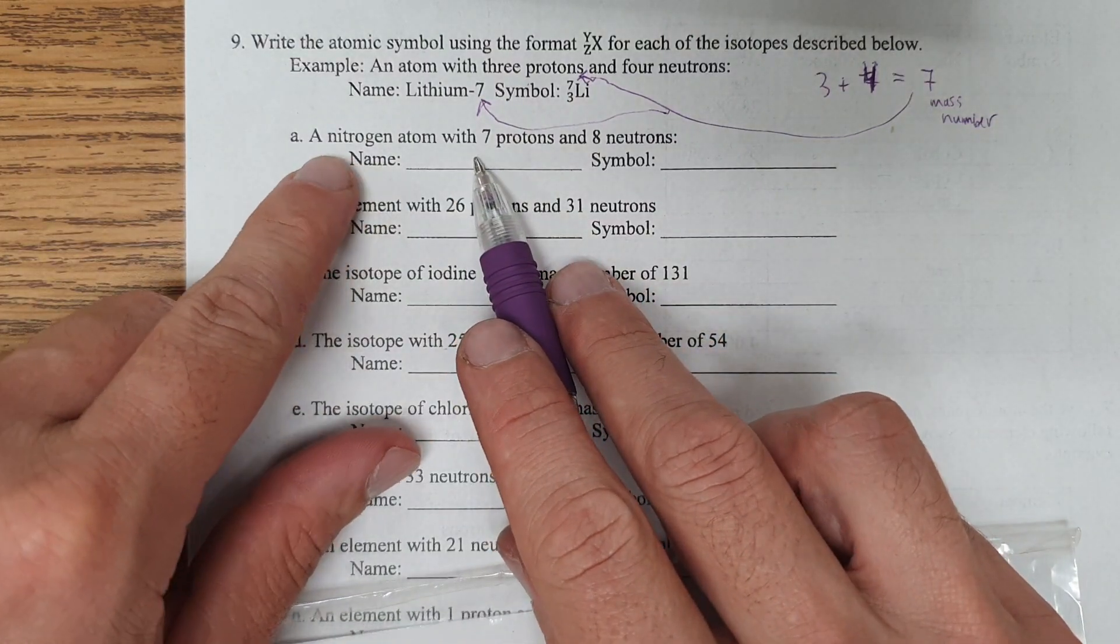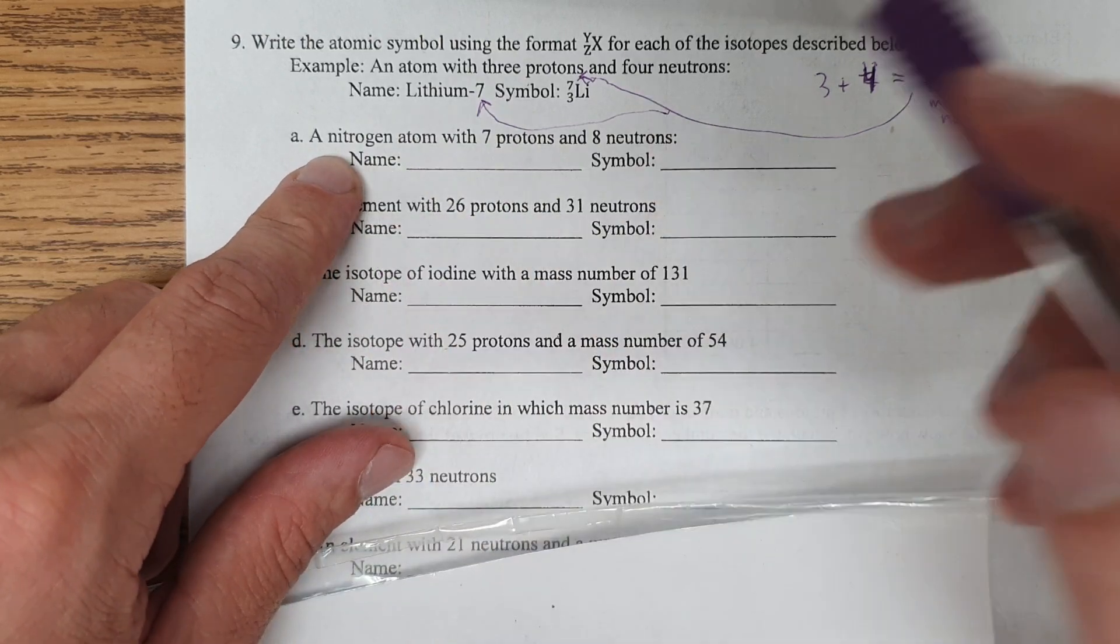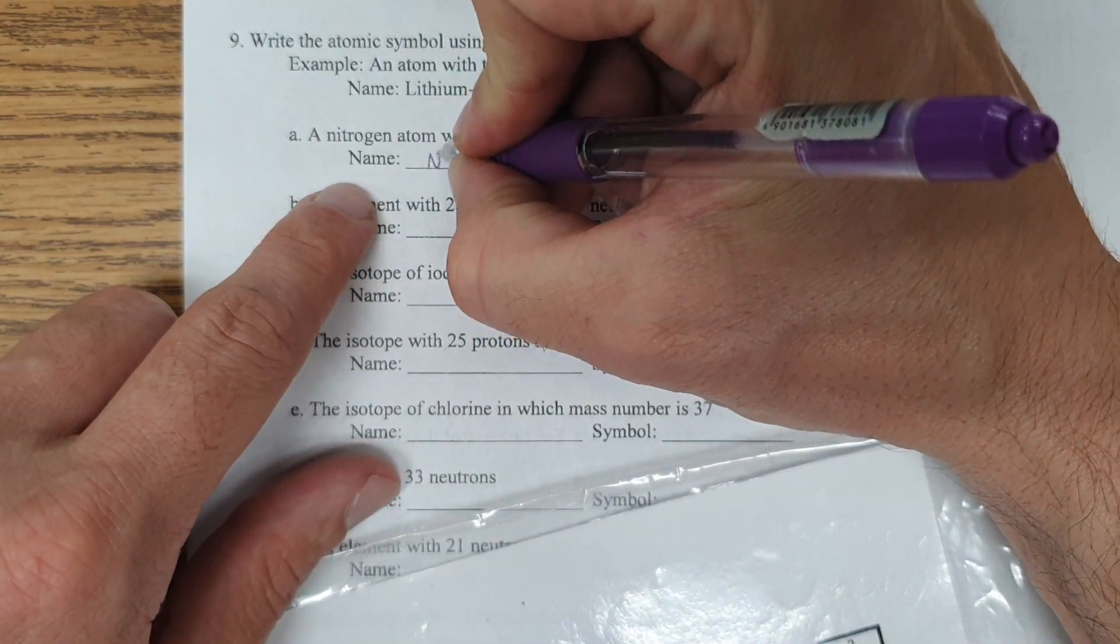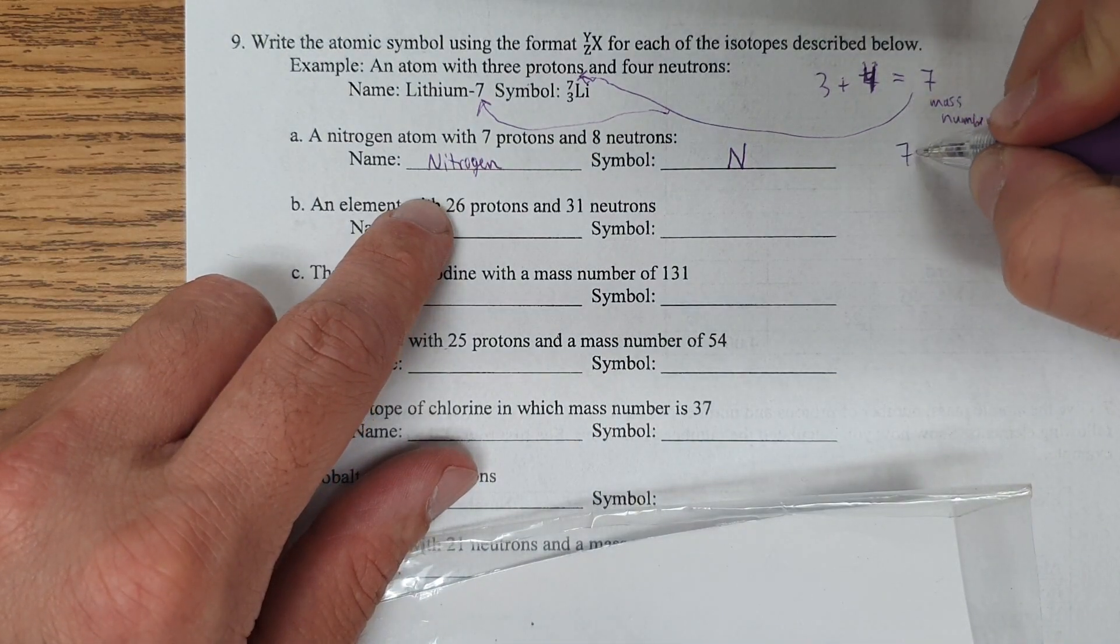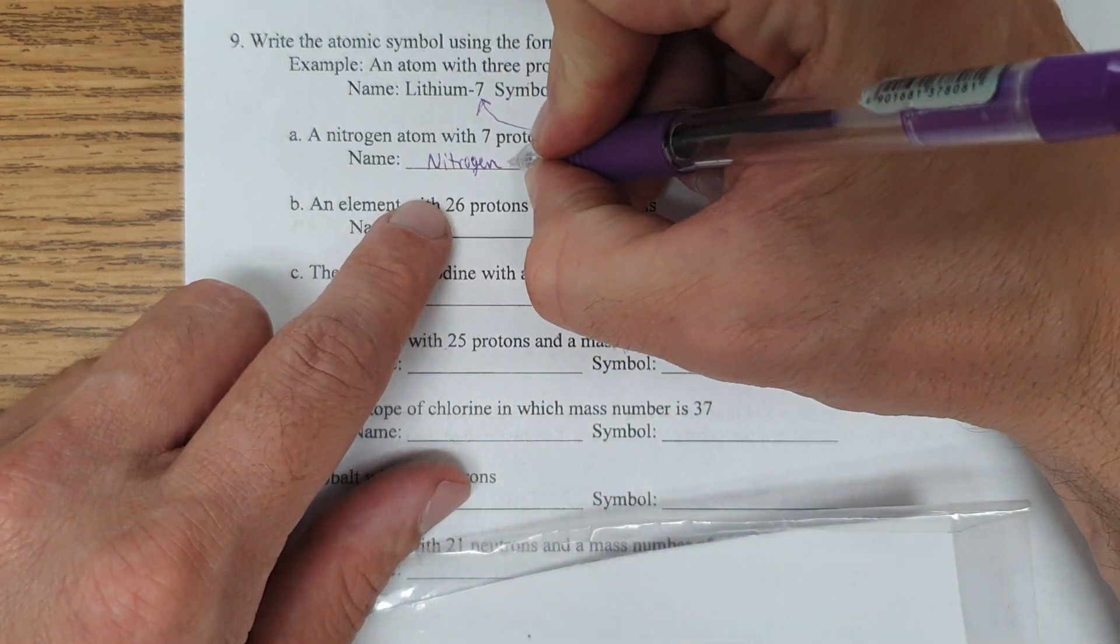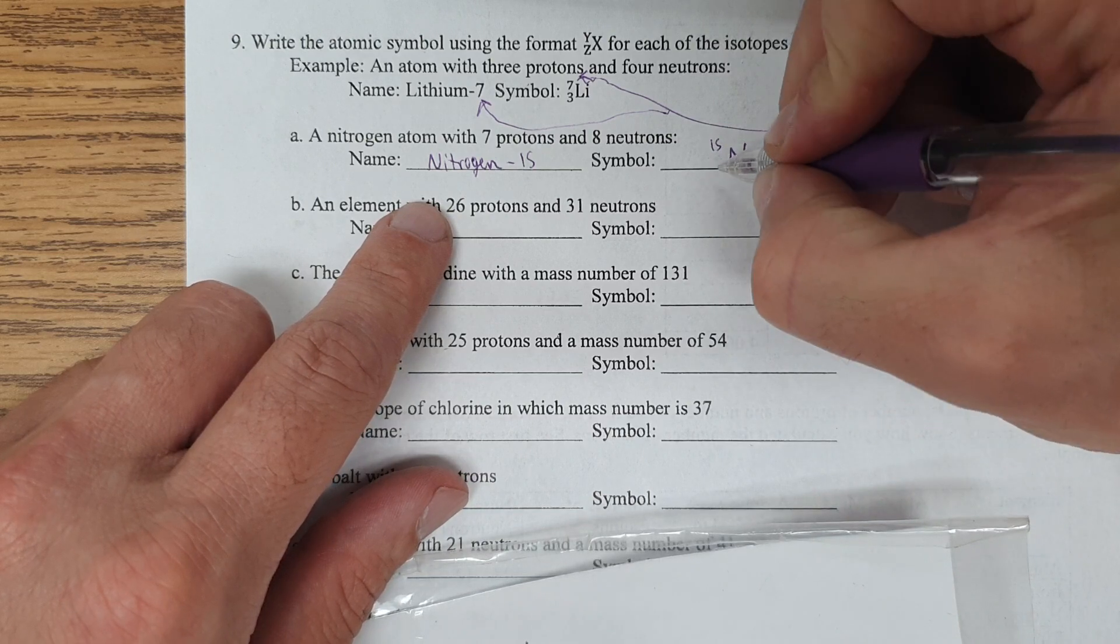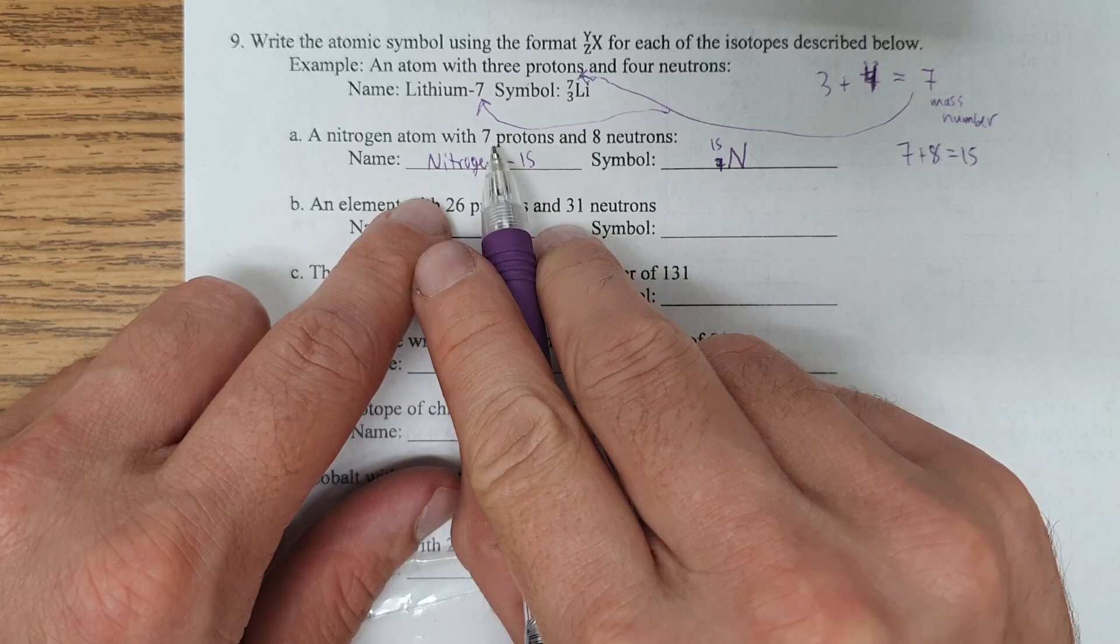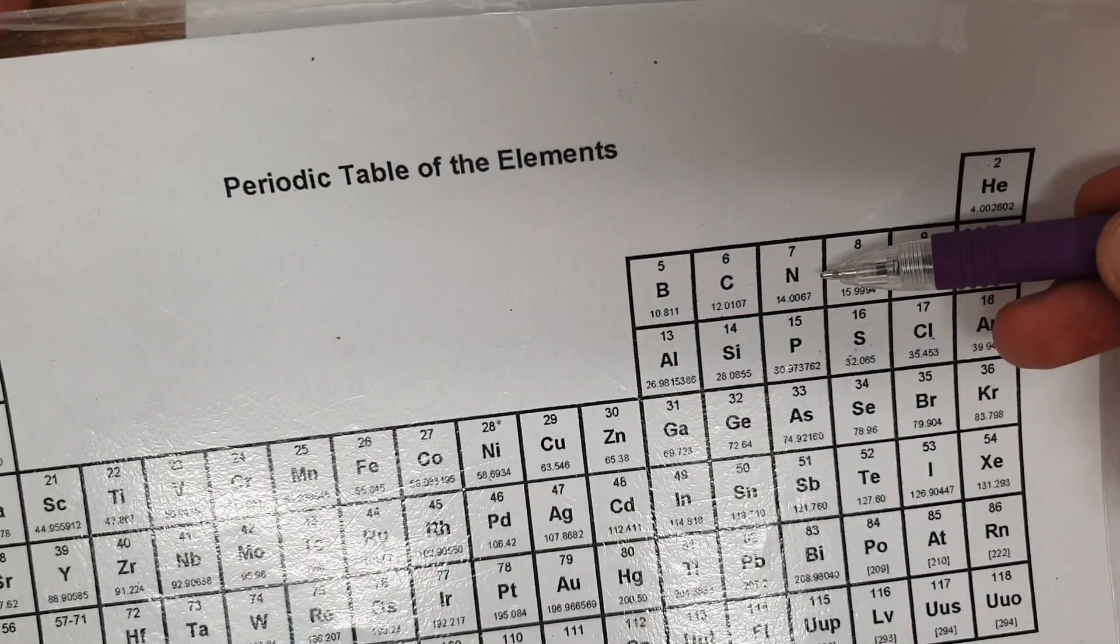So let's do an example. A nitrogen atom with seven protons and eight neutrons. Here I made it easy by telling you it's nitrogen. So N is the symbol for nitrogen. And nitrogen is going to be in the name. Seven protons, eight neutrons. Seven plus eight equals 15. So that's the total mass number. I'd call it nitrogen-15. And then here I put the mass number on top. And because it's nitrogen, that's seven protons. I mean, even if it didn't tell you that there are seven protons, the fact that it's nitrogen alone tells you, you can look it up here and find that it's seven protons.